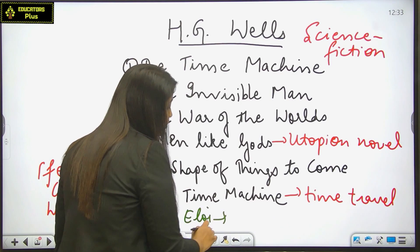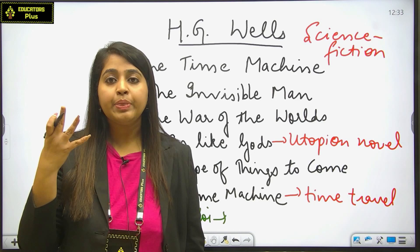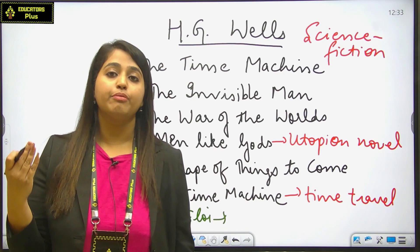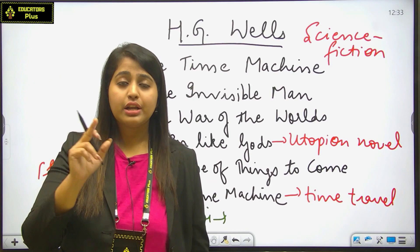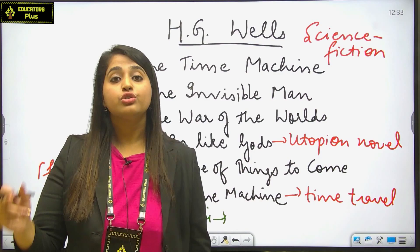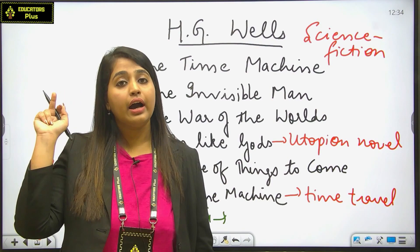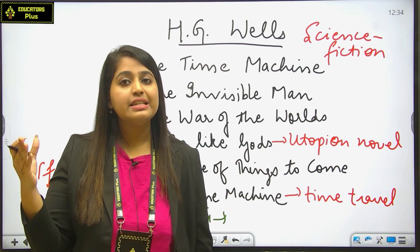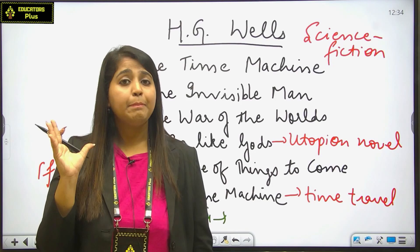There he meets ape-like creatures and later went 30 million years ahead to a place where last living things are dying. This question came in your NET exam: how far the narrator has traveled in the time machine? He first goes to Eloi, that's the society of childlike adults, and later on he travels 30 million years ahead of time where he sees the last living things are dying. A grim picture of society has been presented in the last stage of The Time Machine.